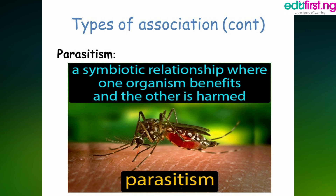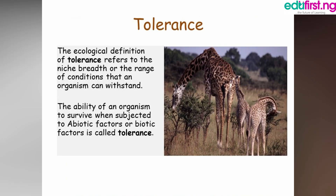That brings us to what we call tolerance in an ecological system. Tolerance refers to a niche or a range of conditions that an organism can withstand — the ability of an organism to survive when subjected to abiotic or biotic factors. That is what we call tolerance.